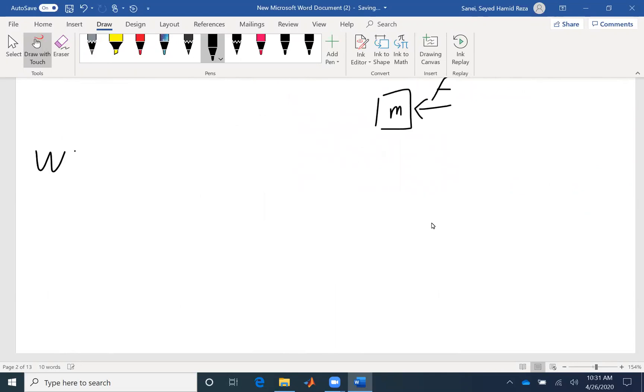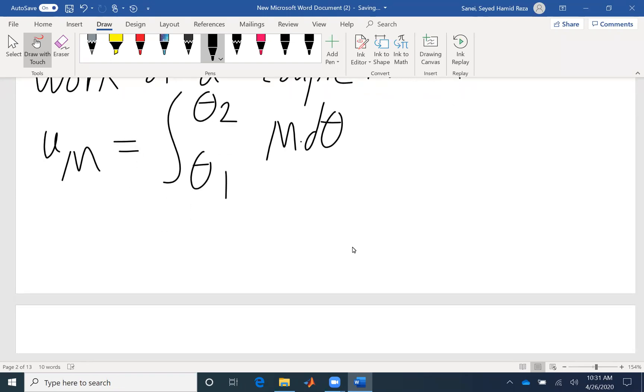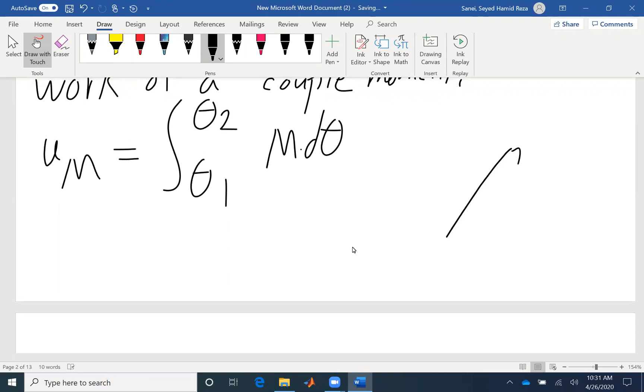And the last work I'm going to talk about is work of a couple moments. That would be theta one, theta two, and d theta. Similar to previous works, if moment and theta are in the same direction, then the work is positive. Otherwise, it would be negative. If you have a rigid body rotating and the moment and displacement are in the same direction, you have a positive sign. Otherwise, you have a negative sign.